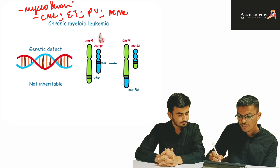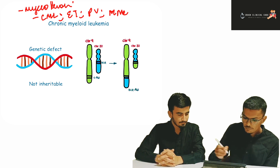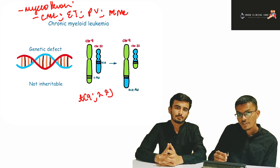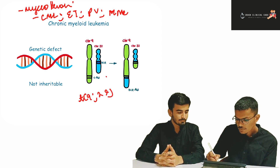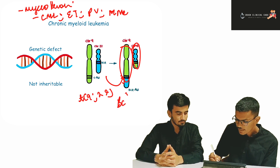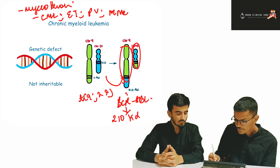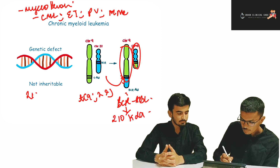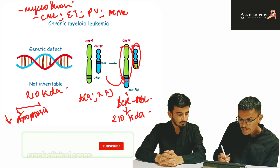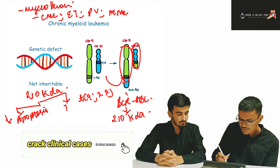CML involves a balanced translocation of chromosomes 9 and 22 — balanced because nothing is lost or gained. As a result, chromosome 9 lengthens and chromosome 22 shortens. This fusion of BCR and ABL produces a 210 kilodalton protein, which causes reduction in apoptosis as well as uncontrolled tyrosine kinase activity.